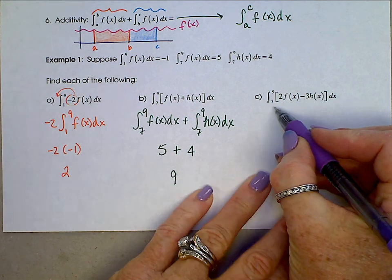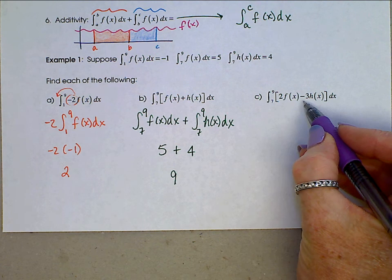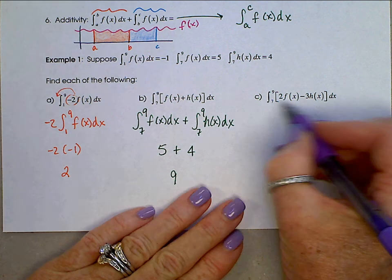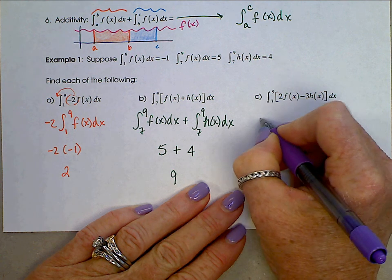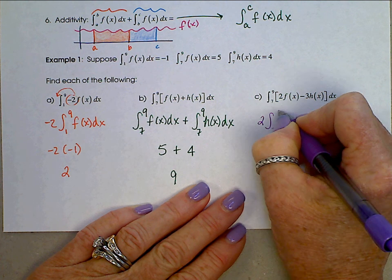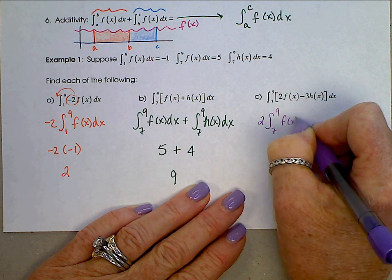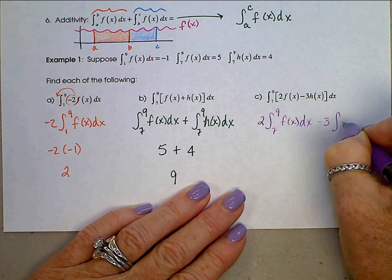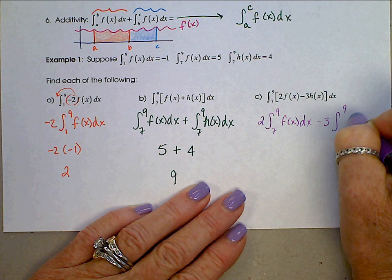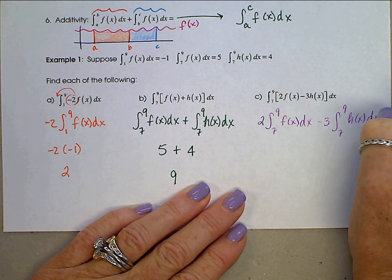This next one, we can separate over this subtraction and at the same time pull out these constants. So separating this apart, we have 2 times the integral from 7 to 9 of f(x) dx minus 3 times the integral from 7 to 9 of h(x) dx.